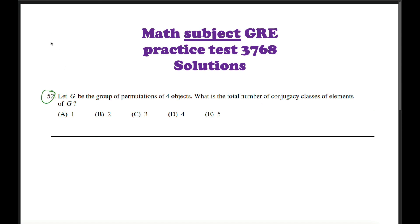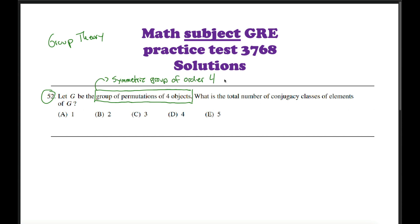Question 52. We're getting into some group theory here. The group in question is the group of permutations of four objects. This is also known as the symmetric group of order four, or for short, S4.